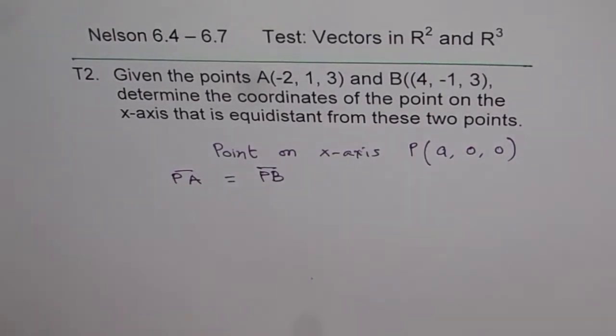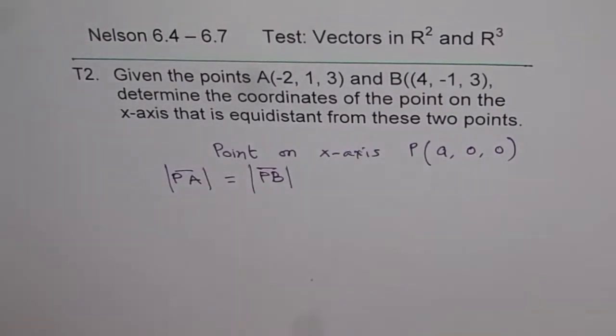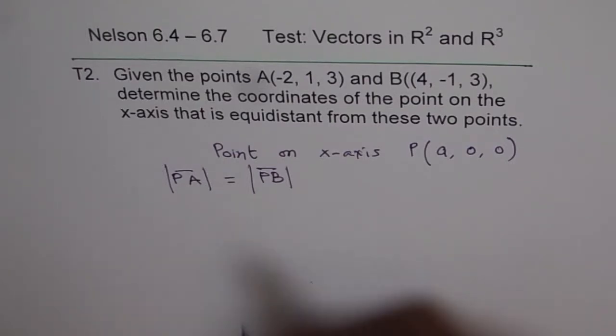So that is what we are looking for, right? Their magnitudes are equal, right? Of course, P to A, P to B vectors cannot be equal. They will be in different directions, but their magnitudes are equal, right? This is what we are looking for.